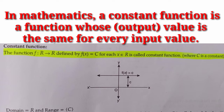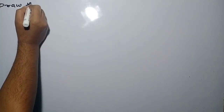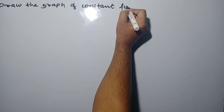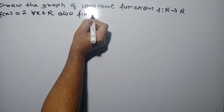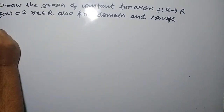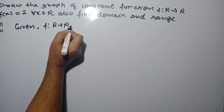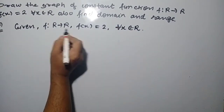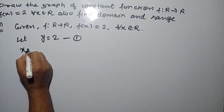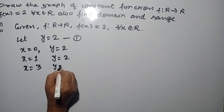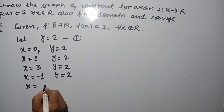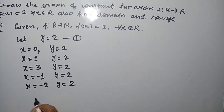The domain of constant function is R. To find the domain of constant function: f(x) defined R to R, f(x) = 2, for all x belonging to R. Let y = 2, equation 1. If you put x = 0, y = 2. If x = 1, y = 2. x = 3, y = 2. x = -1, y = 2. x = -2, y = 2. Meaning nothing changes.